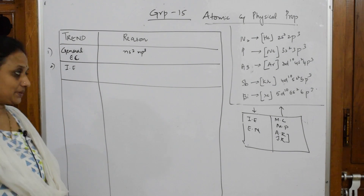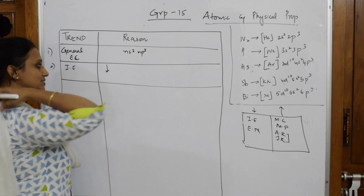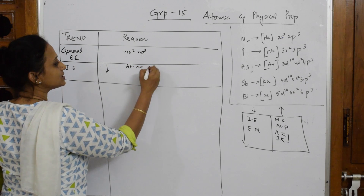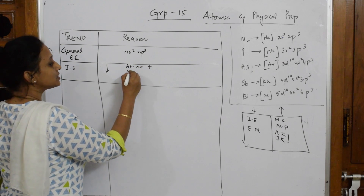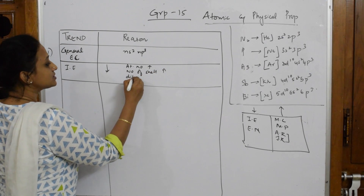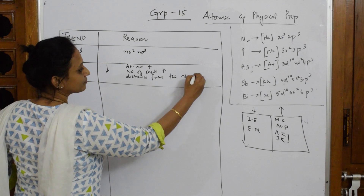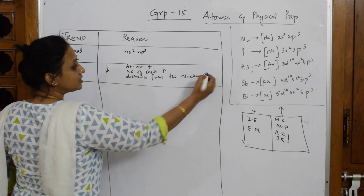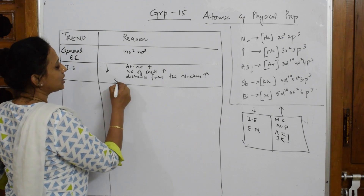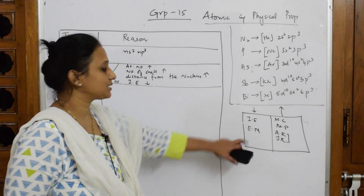As we move from top to bottom down the group, atomic number increases, number of shells increases, distance from the nucleus increases — so we need less energy to pull out the electron. Therefore, ionization enthalpy decreases. With little energy, we can pull out the electron.